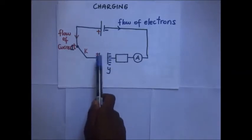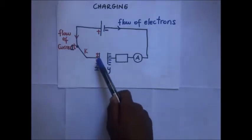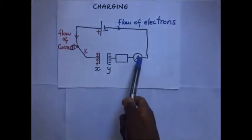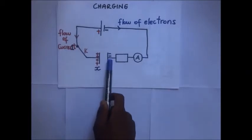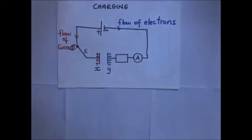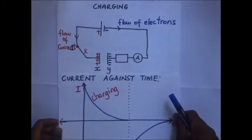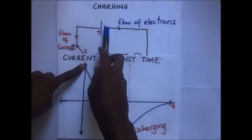As these charges accumulate on the plates, the potential difference across the plates starts increasing. As the potential difference across the plates increases, the amount of current flowing through the ammeter starts decreasing. Initially, the current from the cell is very high, but as the charging process continues, the current decays as the potential difference across the capacitor plates keeps increasing.